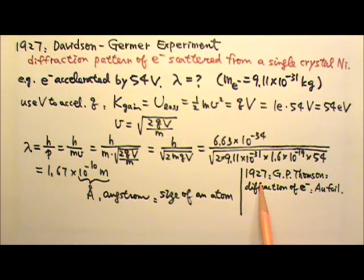That same year, 1927, G.P. Thomson, son of J.J. Thomson, carried out a similar experiment on the diffraction of electrons. Thomson used higher energy, a few kilo-eV electrons, and gold foil instead of a single crystal.